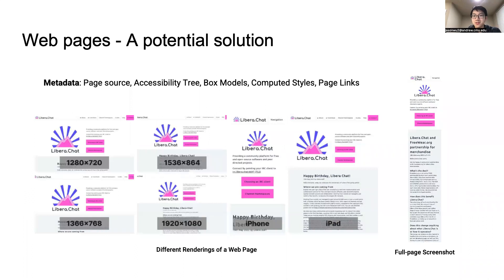As a potential solution, we explored the idea of using web pages as a source of data for visual UI modeling tasks. Each web page contains many types of metadata that can be automatically queried and saved, replacing things that would normally need to be annotated. In addition, we can re-render the same web page using different viewport sizes, different device headers, and even capture a full-page screenshot — all of which can be useful for training models that recognize these attributes in other types of UIs.